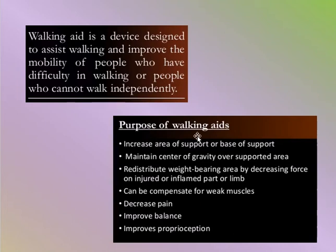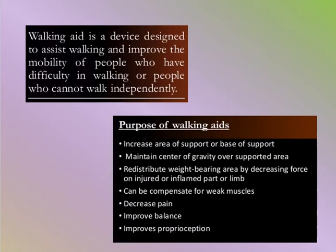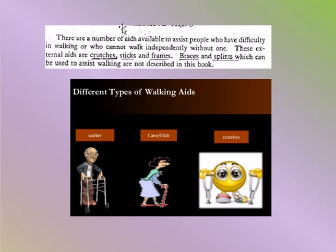The purposes of walking aids are: increase area of support or base of support, maintain center of gravity over the supported area, redistribute weight-bearing area by decreasing force on the injured or inflamed part of the limb. They can compensate for weak muscles, decrease pain, improve balance, and improve proprioception. External aids include crutches, sticks, and frames.